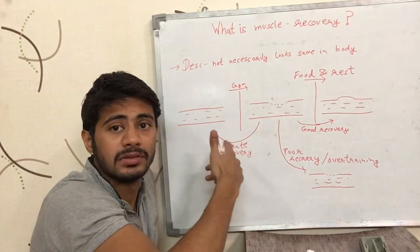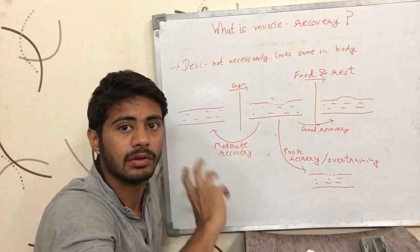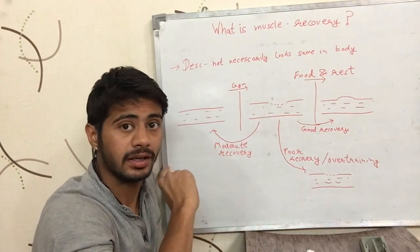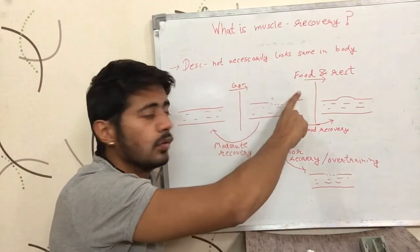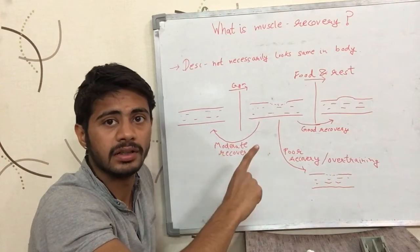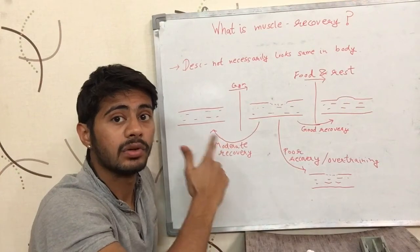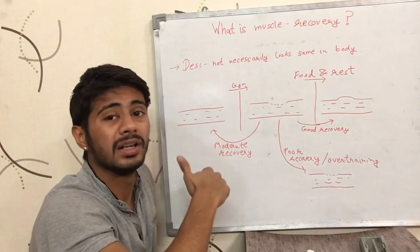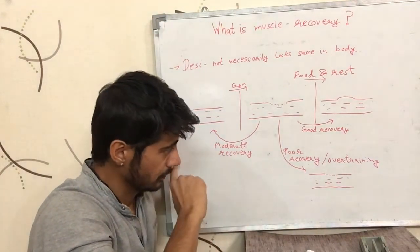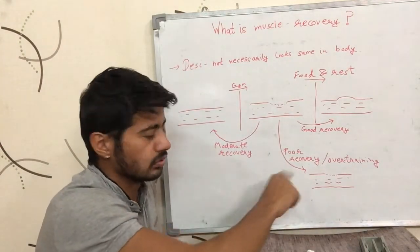And that also happens with overtraining. When you are training too much thinking that you will have a bigger muscle or a bigger body, when you are overtraining, your body cannot recover properly even when the food and rest are in place. Even when you are giving your body the right nutrition and your rest is in place, your body is not able to recover properly because you overtrained, you did a lot of workout or you did too frequently workout for the same muscle.